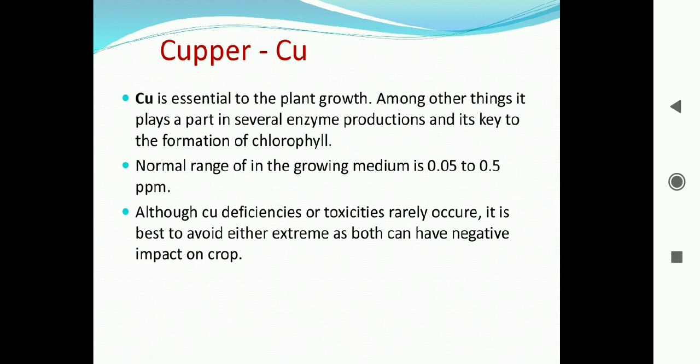Copper is essential for plant growth. It plays a part in several enzyme productions and is key to the formation of chlorophyll. Like magnesium and sulfur, copper is also involved in chlorophyll synthesis. It acts as a coenzyme in some plant species. The normal range of copper in growing medium is 0.05 to 0.5 ppm, within which normal plant growth occurs.